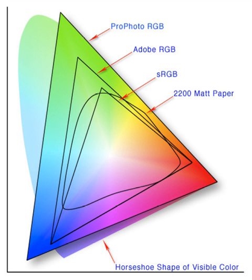HSL — Hue, Saturation, Lightness/Luminance — also known as HLS or HSI (Hue, Saturation, Intensity) is quite similar to HSV. The difference is that the brightness of a pure color is equal to the brightness of white, while the lightness of a pure color is equal to the lightness of a medium gray.